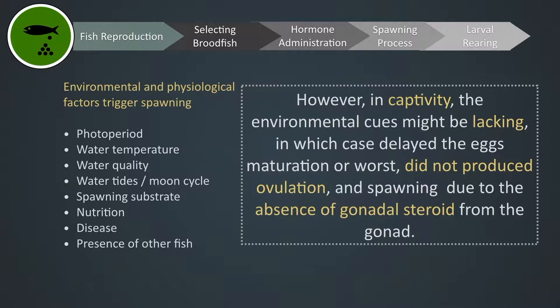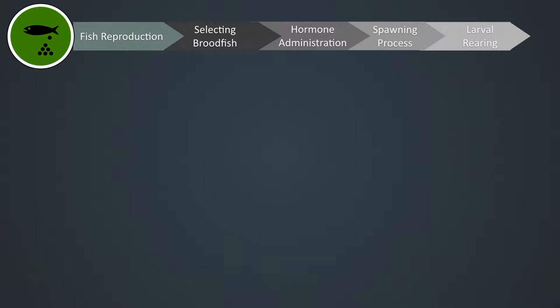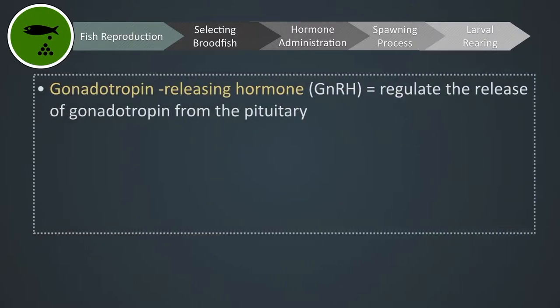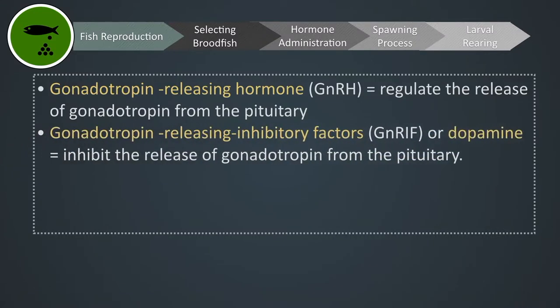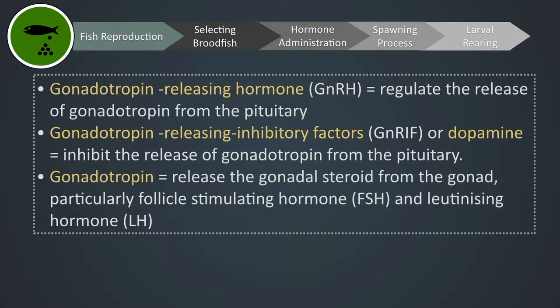The pituitary gland is responsible for stimulating hormonal change in the animal. The major hormones responsible for reproduction functions are gonadotropin-releasing hormone, or GnRH, which regulates the release of gonadotropin from the pituitary; gonadotropin-releasing inhibitory factors, or GnRIF, commonly known as dopamine, which inhibits the release of gonadotropin from the pituitary; and gonadotropin, which releases gonadal steroids from the gonad, particularly follicle-stimulating hormone FSH and luteinizing hormone LH.